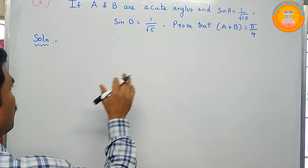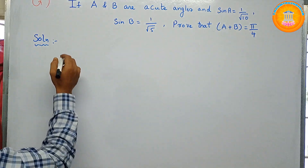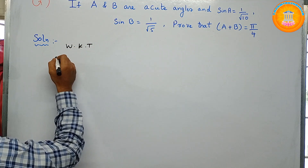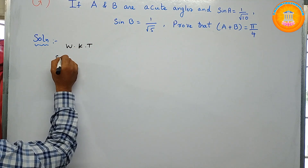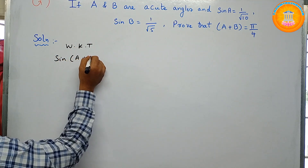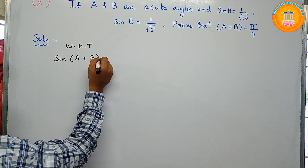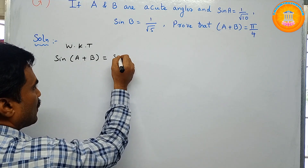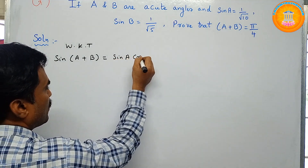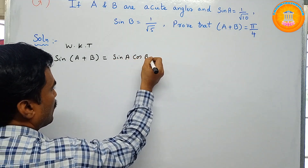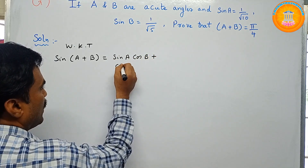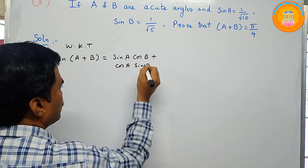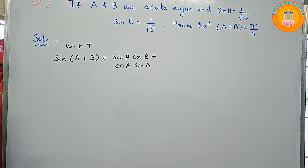First, we write the formula: sin(A + B) = sin A cos B + cos A sin B. From the given problem, we have sin A and sin B, so we need to find cos A and cos B.